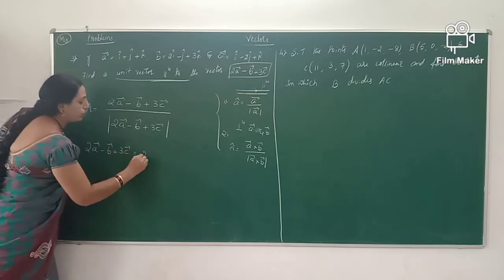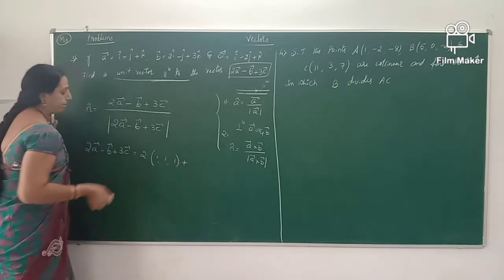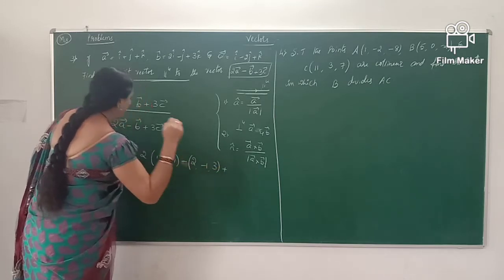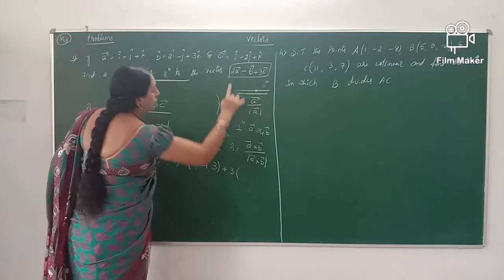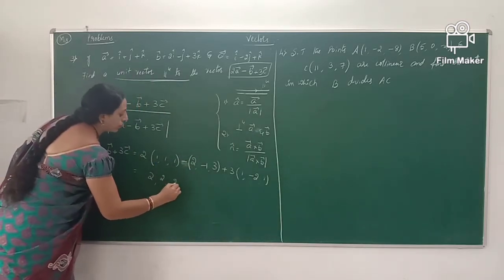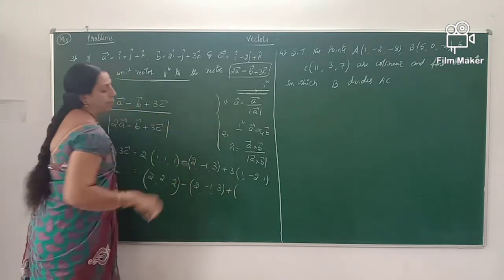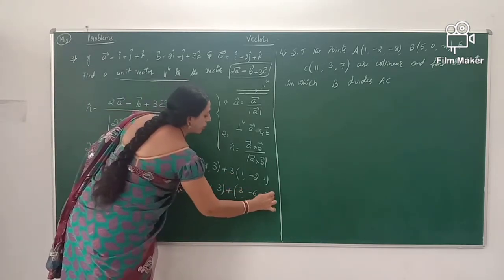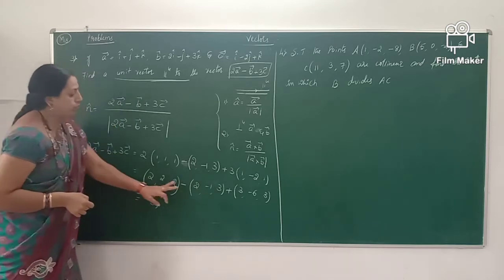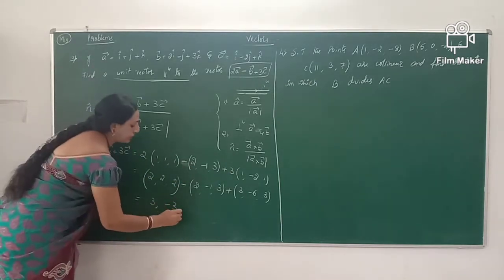First we compute 2 times vector A minus vector B plus 3 times vector C. The components of 2A are 2, 2, 2; minus the components of B which are 2, minus 1, 3; plus 3 times the components of C which are 1, minus 2, 1, giving 3, 3, 3. Simplifying: 2 minus 2 is 0 plus 3 is 3; 2 minus minus 1 is 3; 2 minus 3 is minus 1. Wait — first component: 3, second component: 2 minus minus 1 plus minus 6.